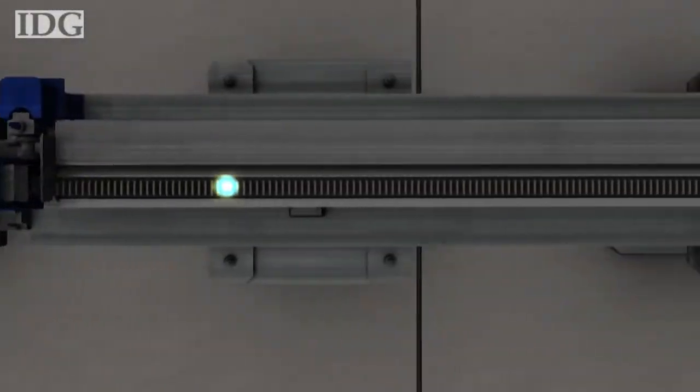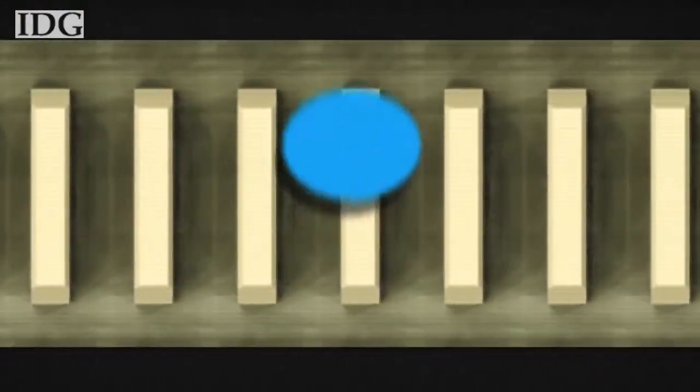Here, special magnets with alternating north and south poles cause the electrons to swerve back and forth, a process that forces them to give off x-rays.